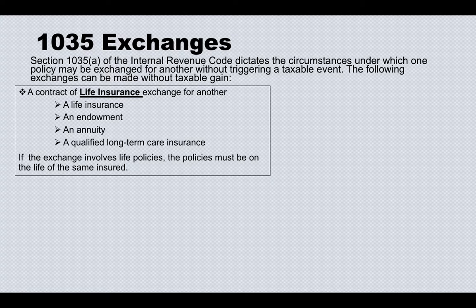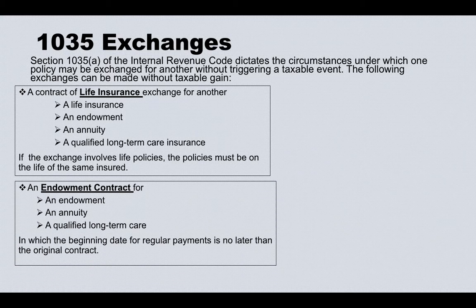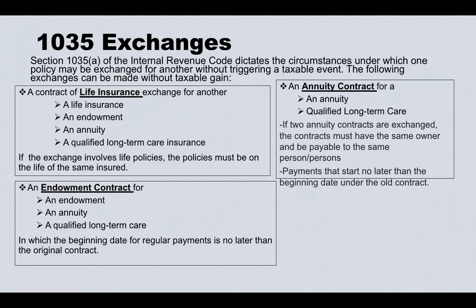Next is an endowment contract. An endowment contract can be exchanged to another endowment, to an annuity, or to a qualified long-term care policy, provided the beginning date of regular payments is no later than the original contract's date.